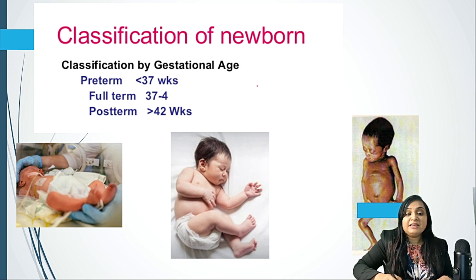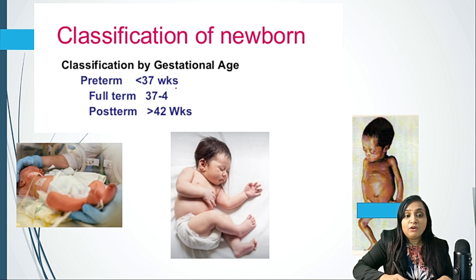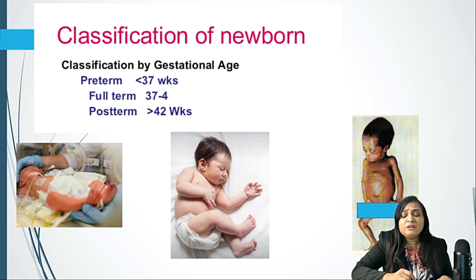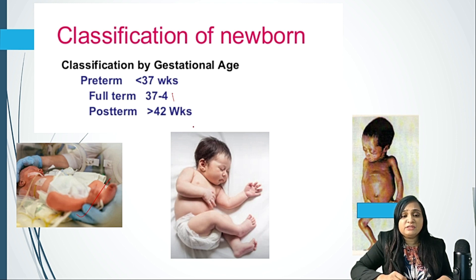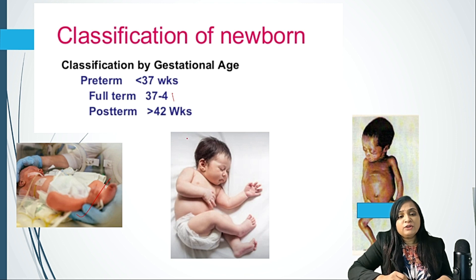If the baby is born before 37 weeks of gestation, we call those babies preterm. These babies are vulnerable to many problems and complications. Starting from 37 to 41 weeks, we call them full-term babies. Any baby born between 37 and 41 weeks of gestational age is called a full-term baby. Babies born after 42 weeks of gestation are called post-term babies.